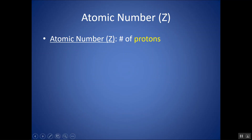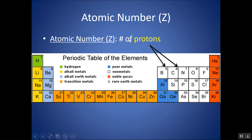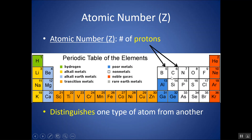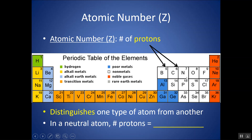The atomic number — sometimes referred to with the symbol Z — is the number of protons, and that depends on which element it is. The number of protons is what distinguishes one type of atom from another. Carbon atoms have a different atomic number — a different number of protons — than a nitrogen atom. If you change the number of protons, you change the element; you change the identity.